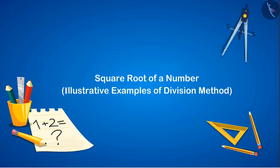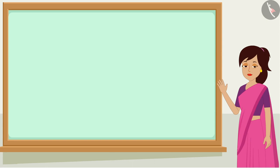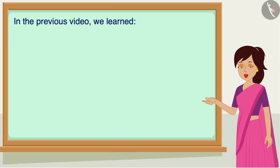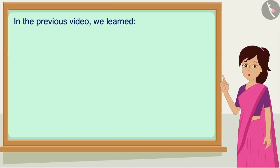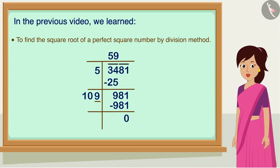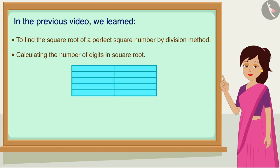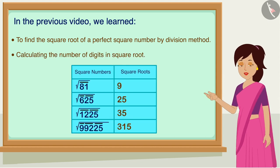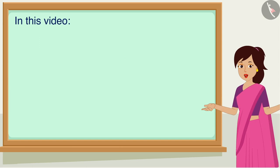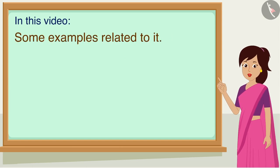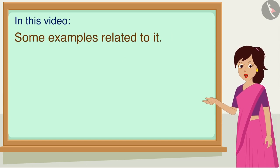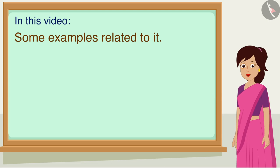Square root of a number: examples of the division method. Hello friends, welcome to this video. In the previous video we learned to find the square root of a perfect square number by the division method and to calculate the number of digits in its square root. In this video we will see some examples associated with the division method of finding the square root.